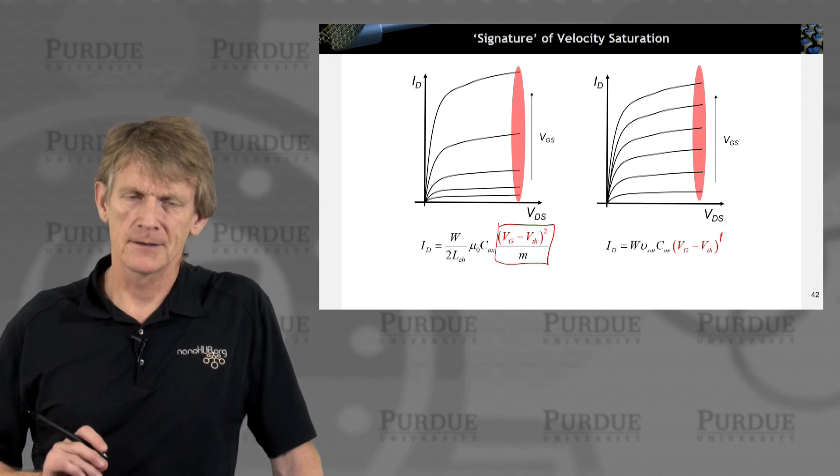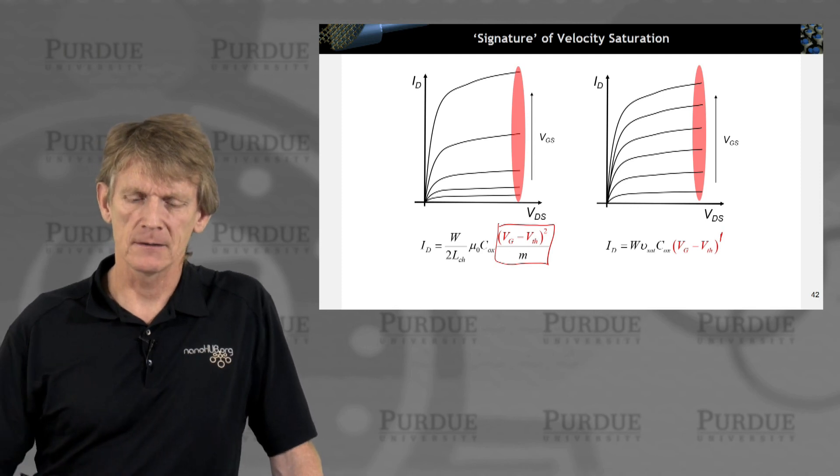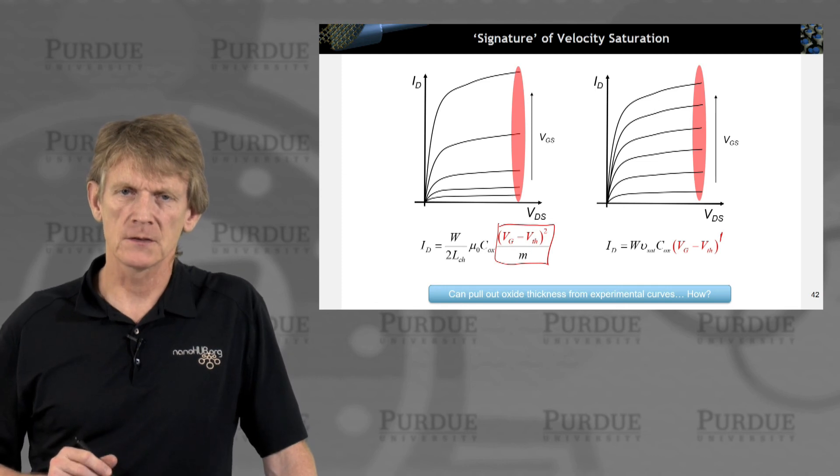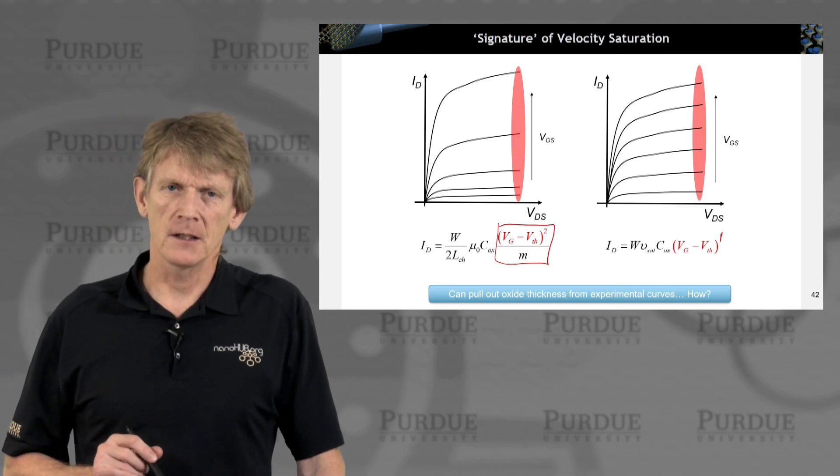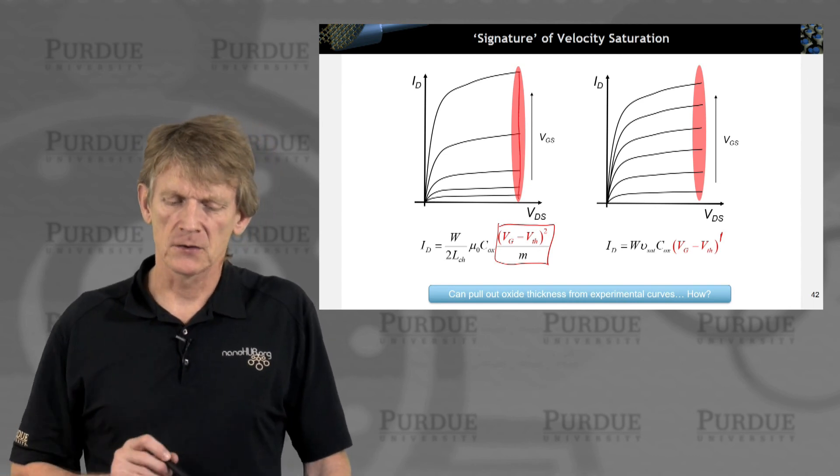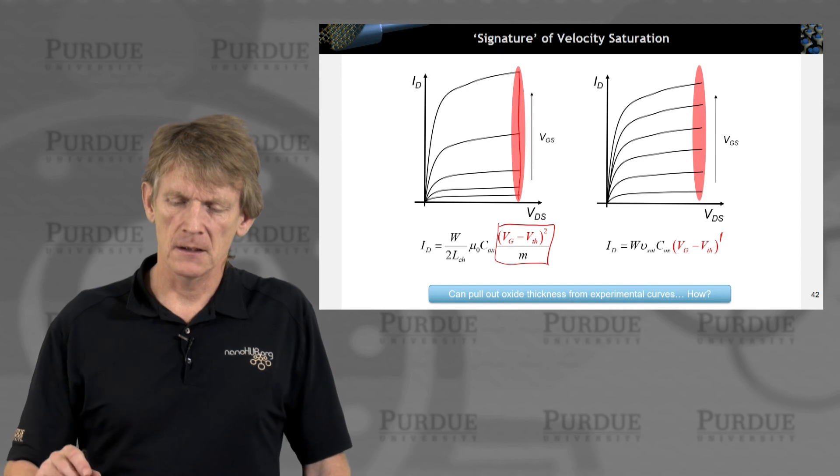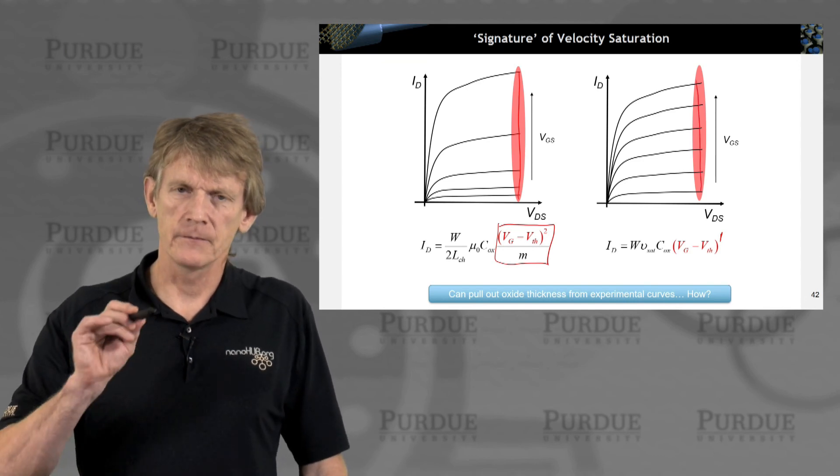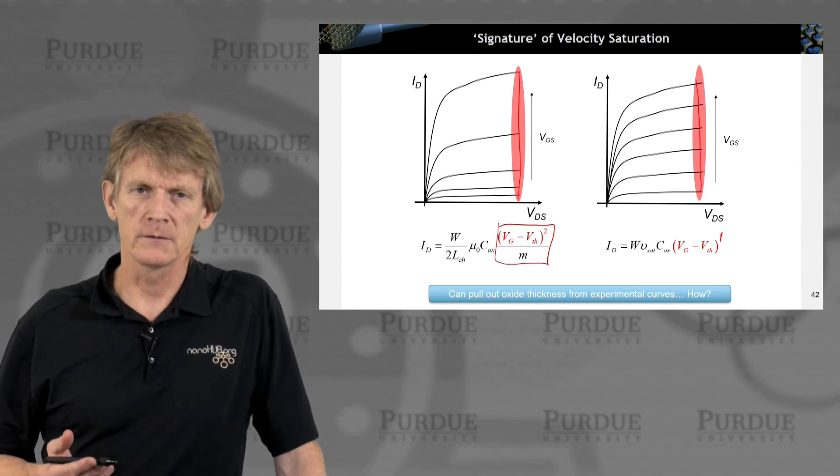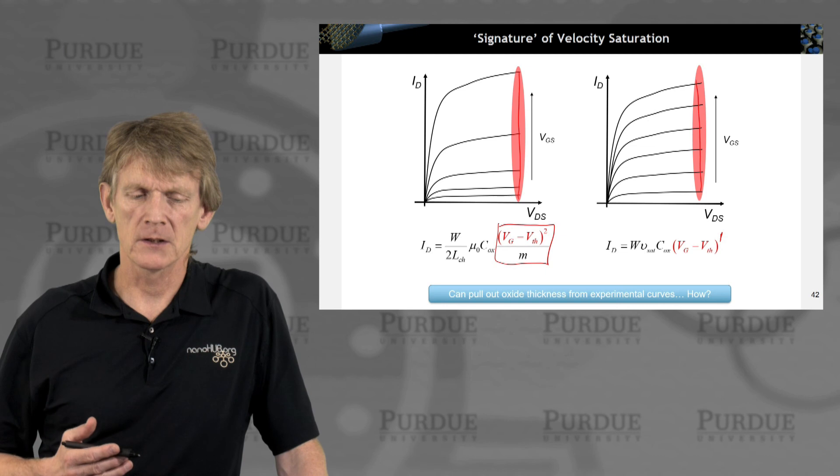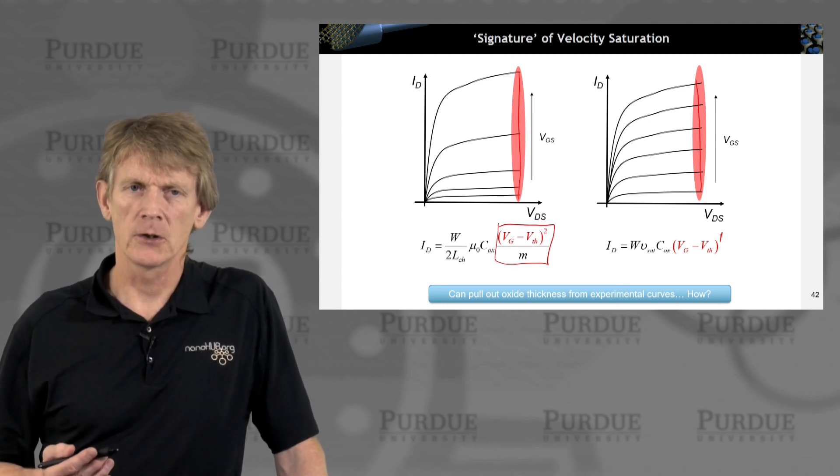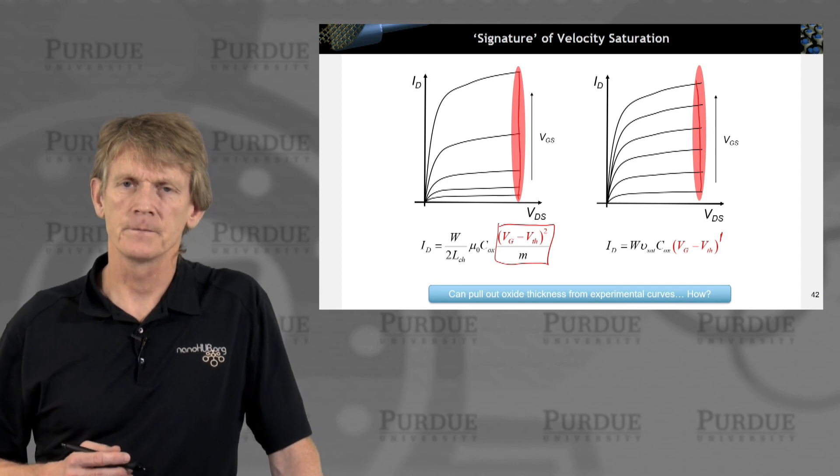what you'll find is it goes linearly, so power 1 with Vg minus V threshold. So, it's just a little exponent, but what that means is the IVs behave quite differently. So, just step back, squint a little bit. Obviously, this behavior here goes as a square versus here it comes linearly. So, there's a way you can measure from experimental curves how much you're limited by saturation versus being in the long channel limit.